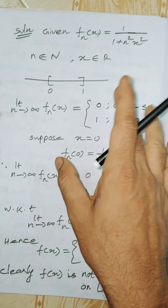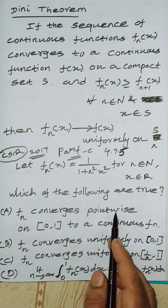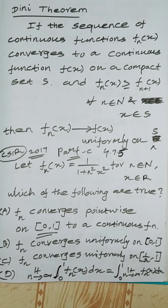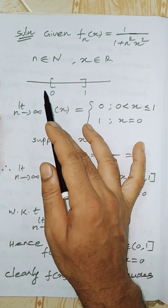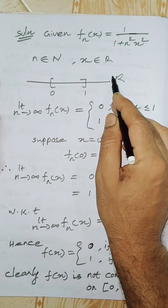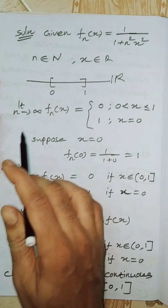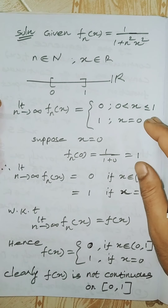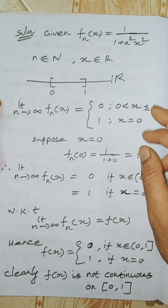Option A: we check the closed interval [0,1]. First, we check pointwise convergence. We need to verify that the limit as n tends to infinity of fn(x) equals f(x). So we take the limit as n tends to infinity of fn(x).